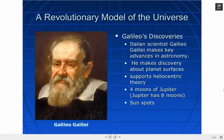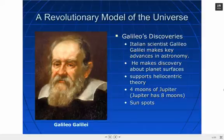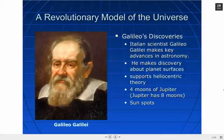Another important person is Galileo Galilei. Galileo also makes more advancements in astronomy — the study of the stars. He starts to observe planets and stars using a telescope, which is a very new invention at the time. What he discovers supports Copernicus and the heliocentric theory, that the sun is the center. He also finds out about four moons of Jupiter, observes the planet Jupiter, and looks at sunspots.